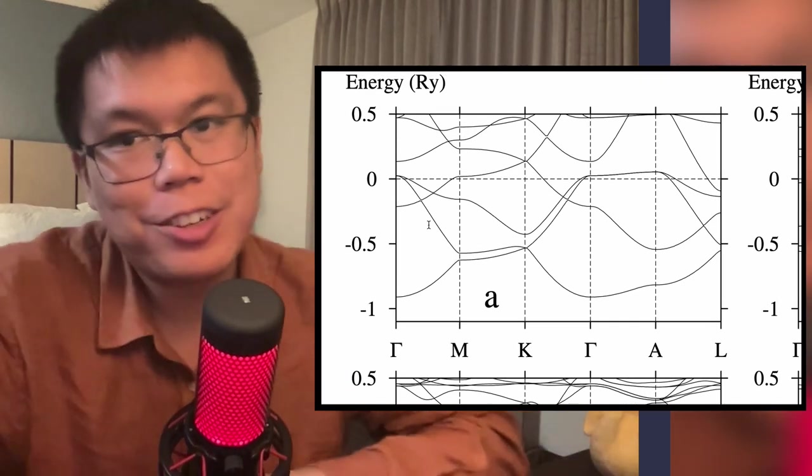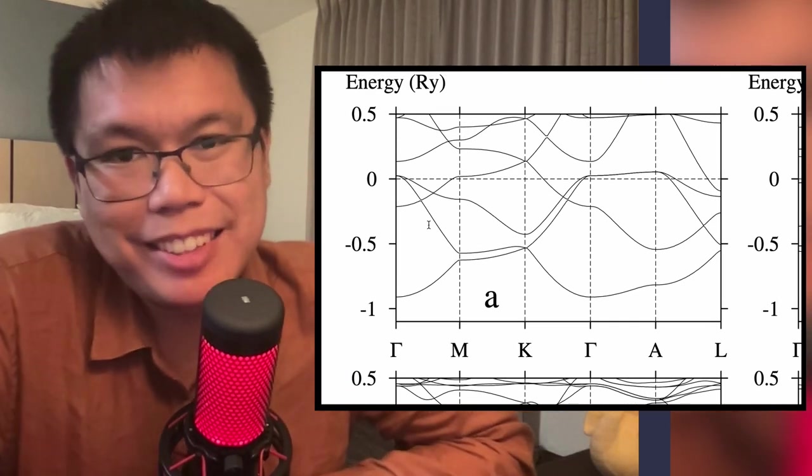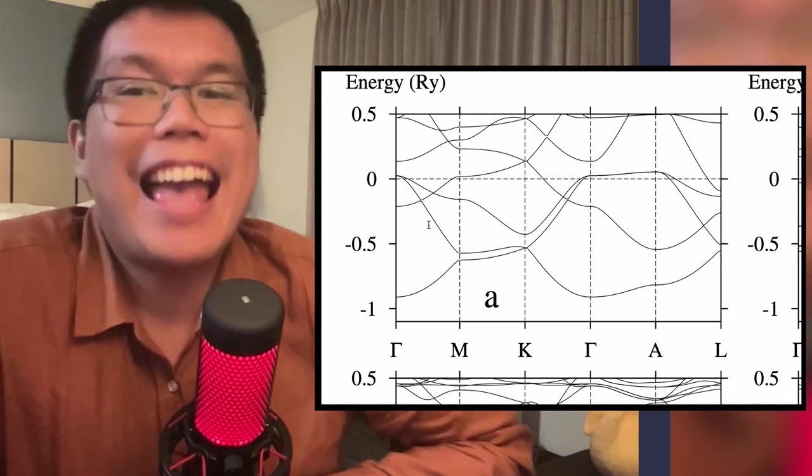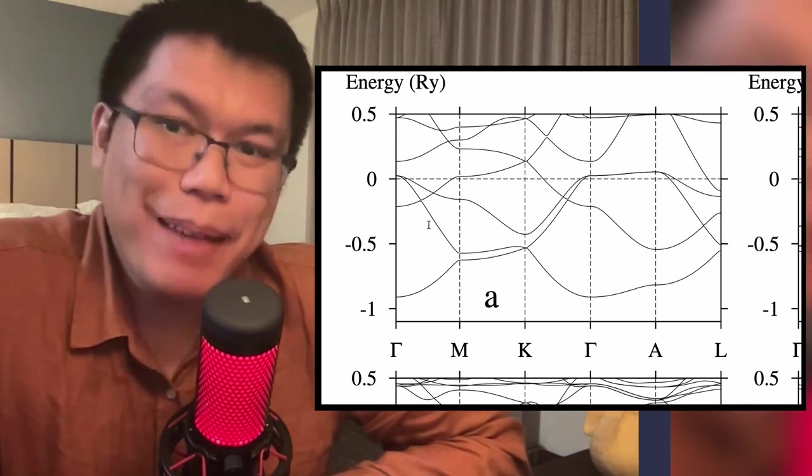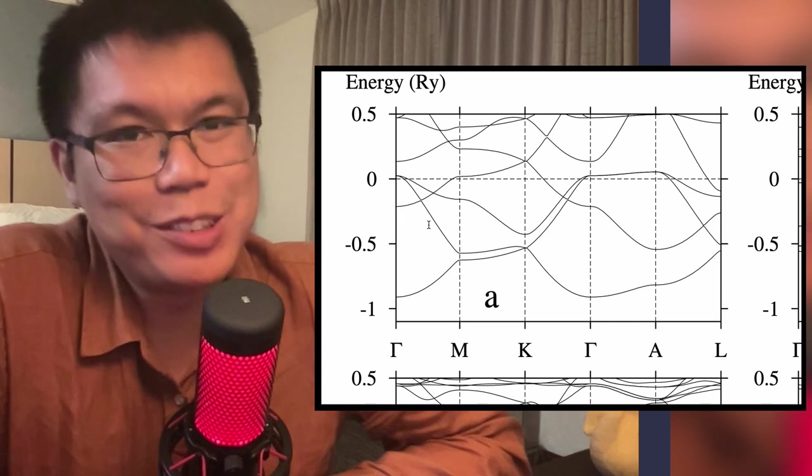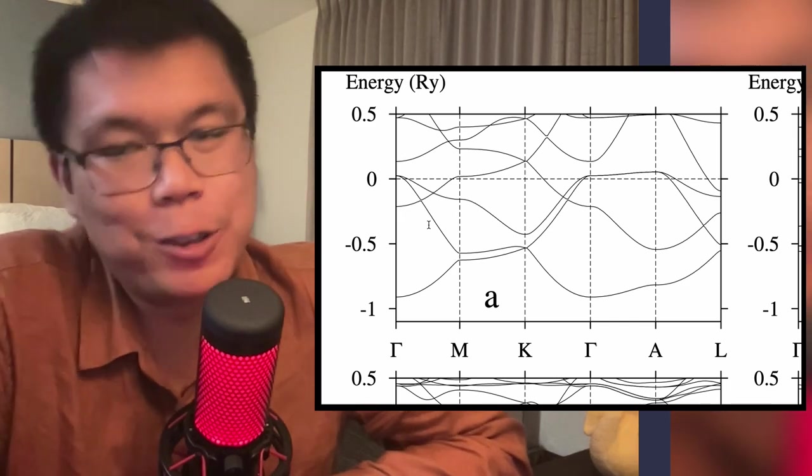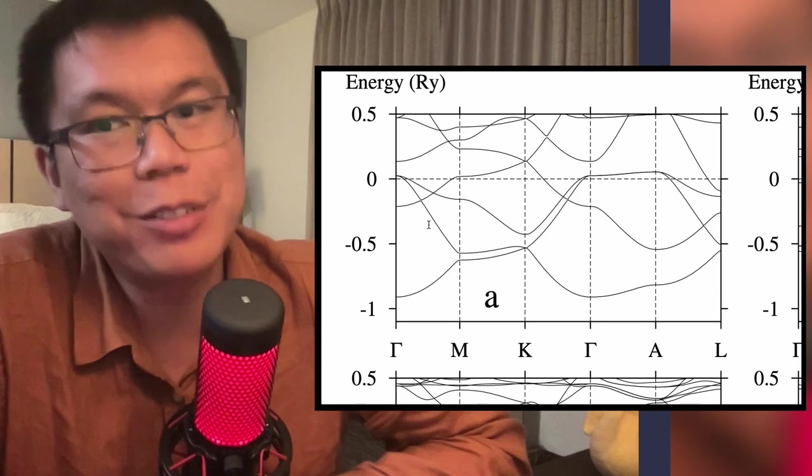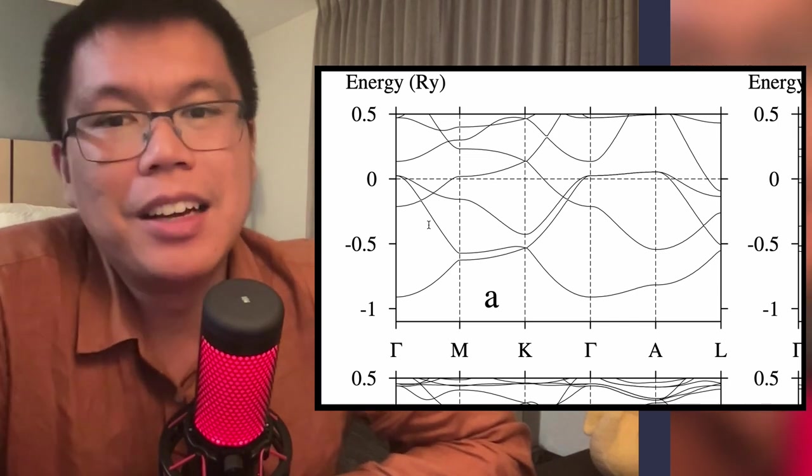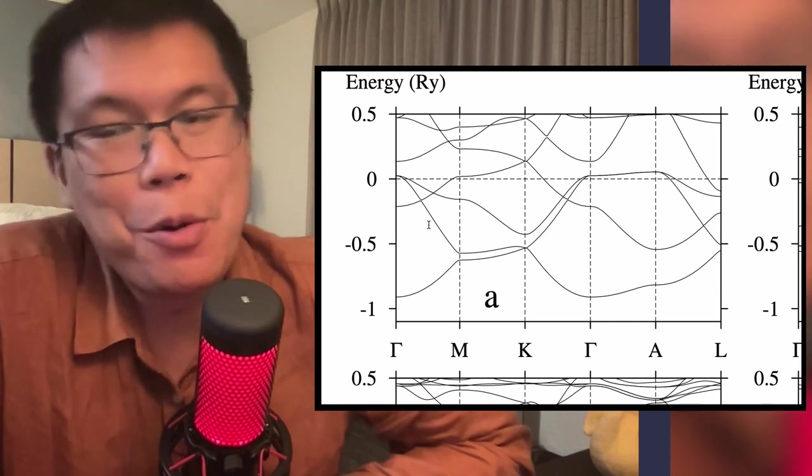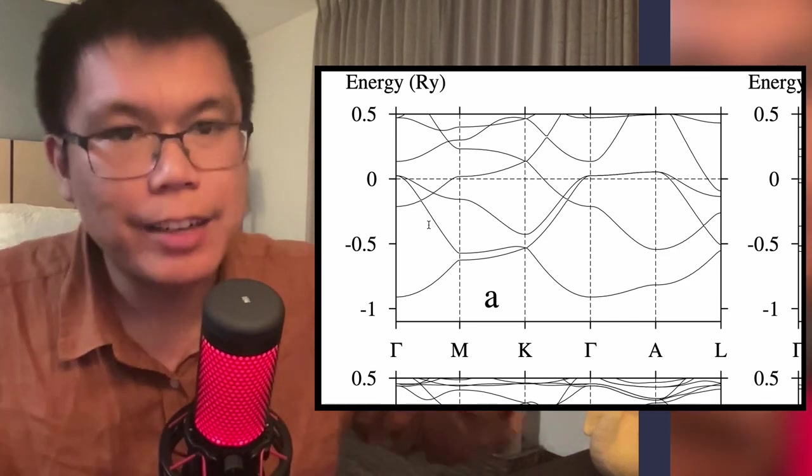So what we have now zoomed in on the screen, is the band structure of a superconducting material. And as you can see, this is basically completely different to what has been shown and calculated for the LK99 supposed room temperature superconductor.